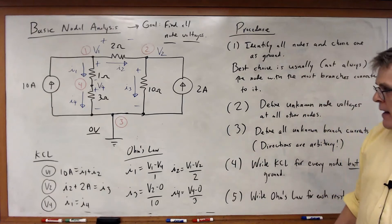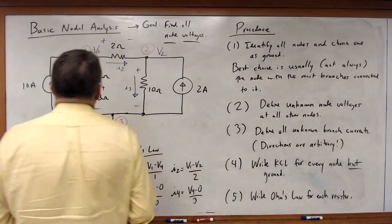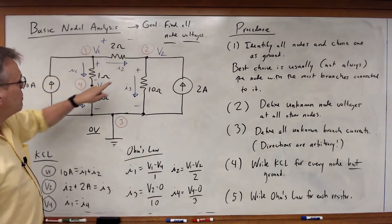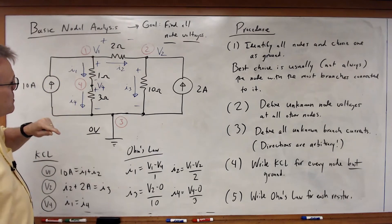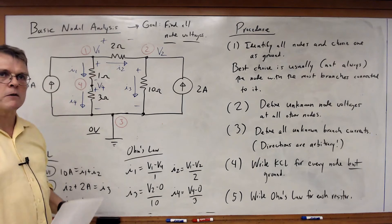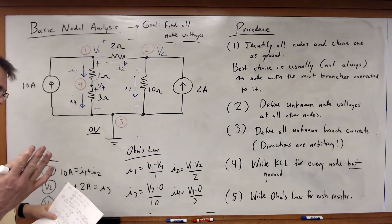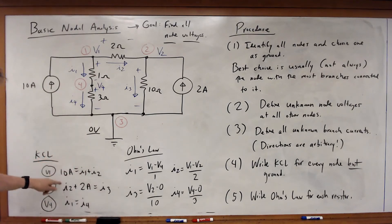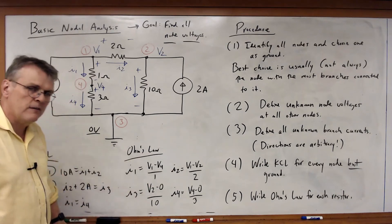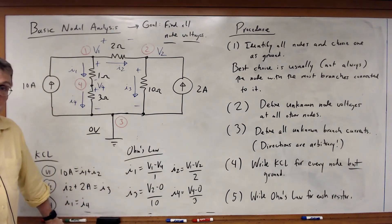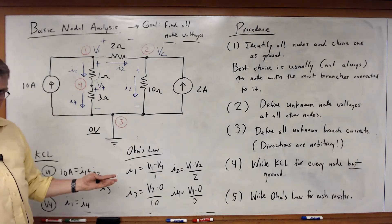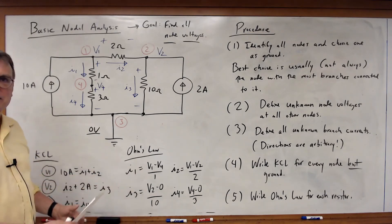Well, what have I got here? I've got one, two, three unknown node voltages, one, two, three, four unknown currents. So I've got seven variables, and I've got one, two, three, four, five, six, seven equations. Seven variables, seven equations. Put it into Mathematica. I can now solve.